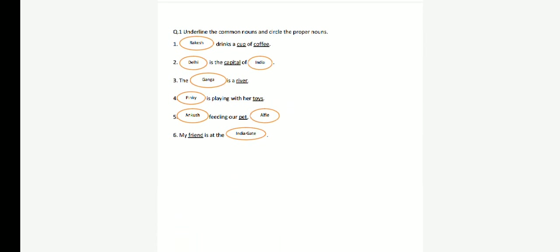Next reading. Underline the common nouns and circle the proper nouns in the sentences. Delhi is the capital of India. Delhi and India proper nouns, capital common noun. The Ganges is a river. Ganges is proper noun and river common noun. Pinky is playing with her toys. Pinky proper noun and toys common noun. Angush is feeding our pet Alfie. Angush and Alfie are proper nouns. Pet common noun. Last one. My friend is at India gate. India gate proper noun. Friend common noun.